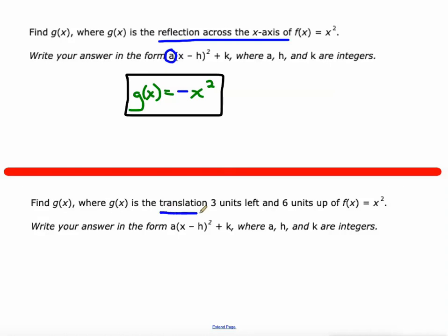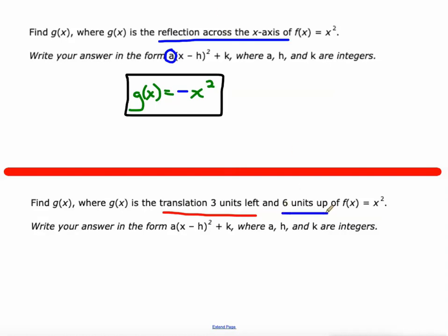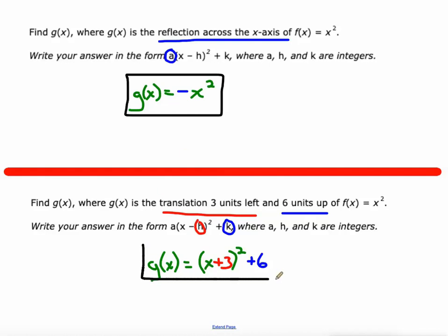Down here we're doing a translation three units left and six units up. The left and right is controlled by H, and the up and down is controlled by K. So G(x) — there is no A value, we're not doing any vertical stretch or reflection — equals x minus (−3), which is really (x + 3)², plus six since it's six units up. That would be our function after a translation three units left and six units up.